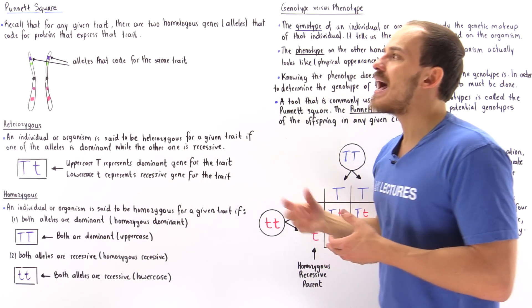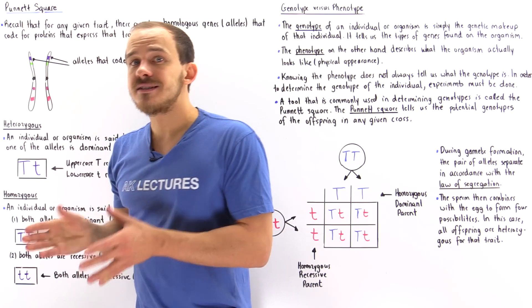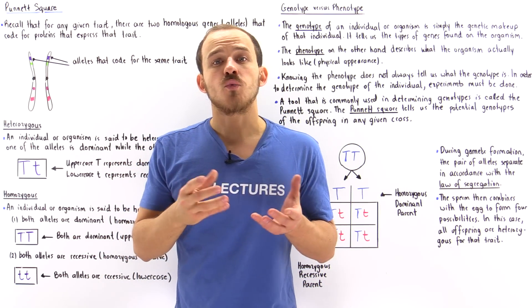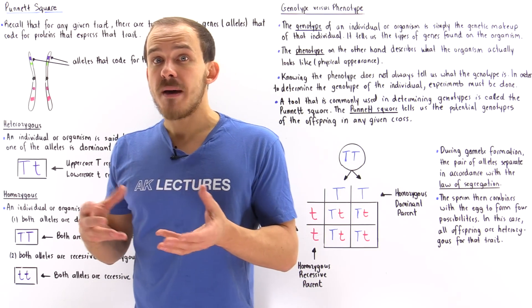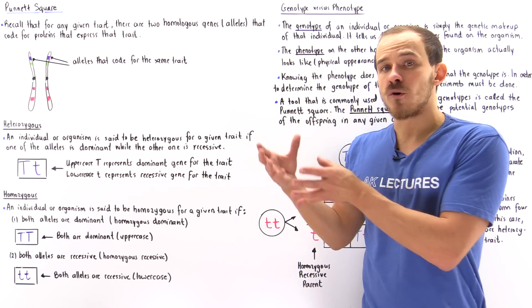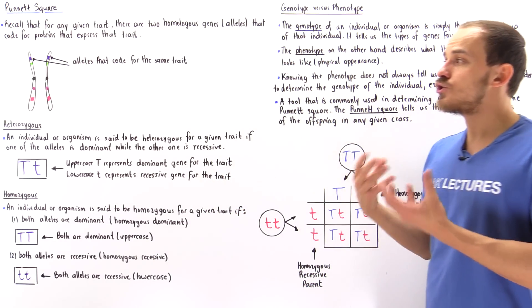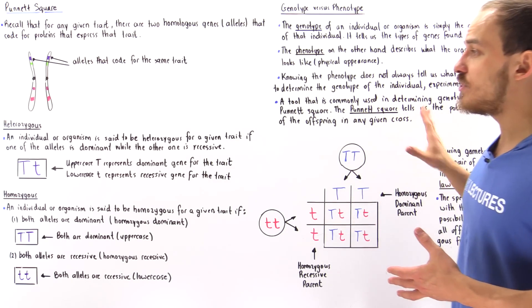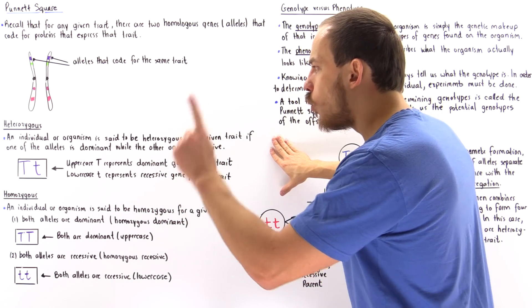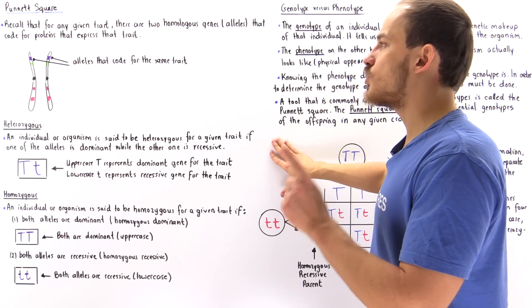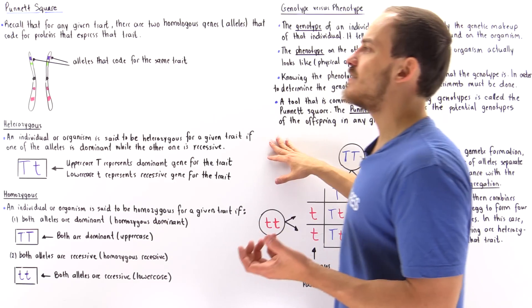An organism is heterozygous if one of the genes in the pair of alleles is a dominant gene for that given trait and the other one is recessive. According to Mendel's law of dominance, the dominant gene codes for a protein that inhibits the expression of the recessive gene. Usually an uppercase letter designates the dominant gene, and a lowercase letter designates the recessive gene.